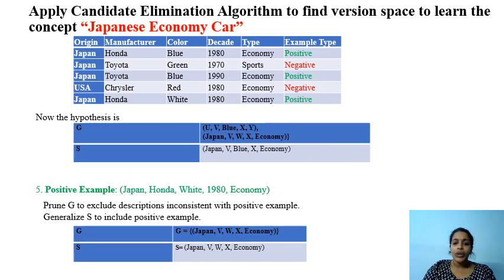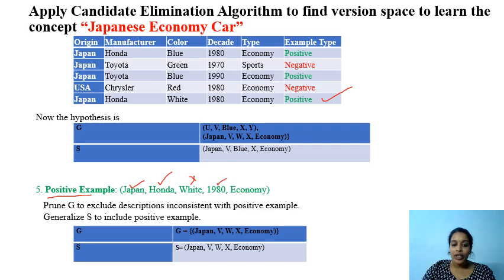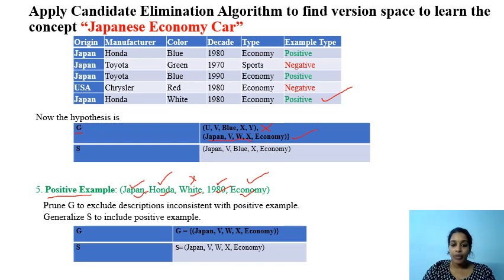Now we got a positive example as the fifth instance. U and Japan are accepting. V and Honda accepting, but Blue and White are not accepting. X and 1980 are accepting, Y and Economy are accepting. So we need to make changes here — this first hypothesis in G cannot accept this current positive instance, so we delete it from G. Trying with the second hypothesis: Japan is accepting, Honda, White, 1980, Economy are all accepting — so Japan, V, W, X Economy is consistent.